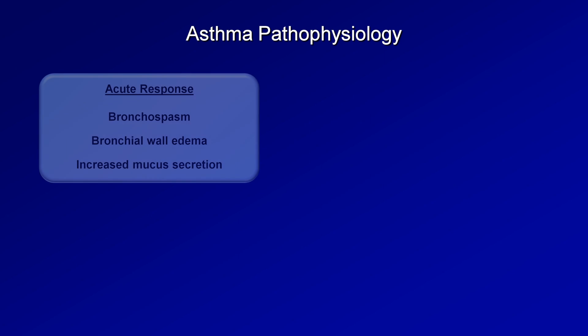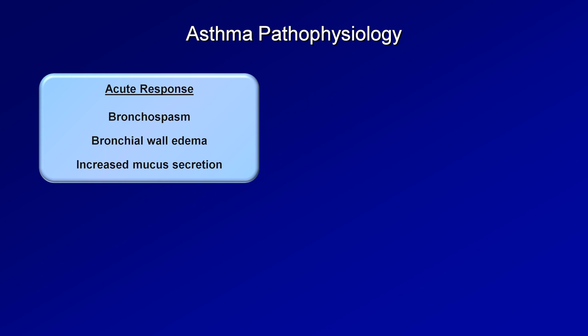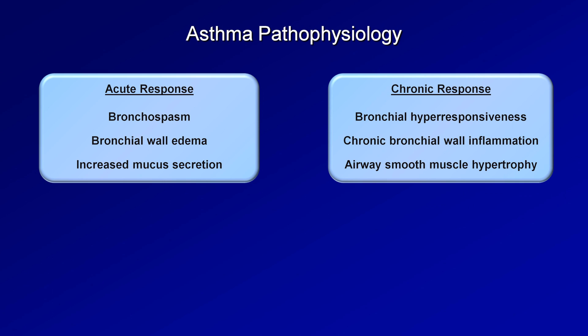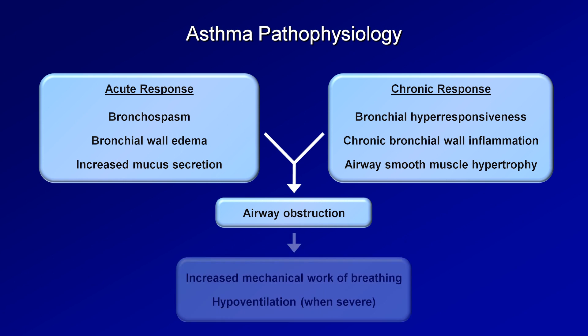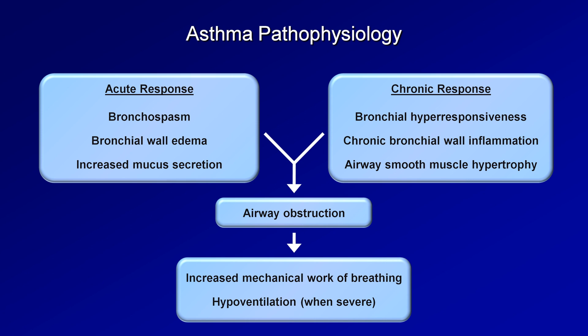The immediate acute response to these chemical mediators is a combination of bronchospasm, bronchial wall edema, and increased mucous secretion. Chronically, over weeks to years, exposure to triggering allergens will eventually lead to bronchial hyperresponsiveness, chronic bronchial wall inflammation, and airway smooth muscle hypertrophy, which could lead to some degree of airway obstruction even between exacerbations. Irrespective of acute or chronic response, the primary physiologic consequence is airway obstruction, which leads to increased mechanical work of breathing, and if severe, hypoventilation and eventually hyperinflation and life-threatening gas exchange abnormalities.